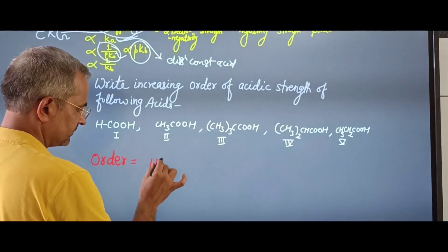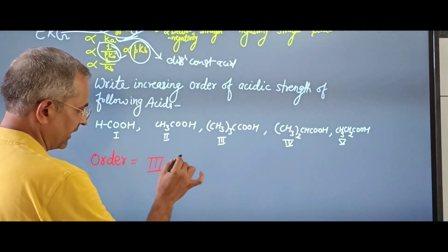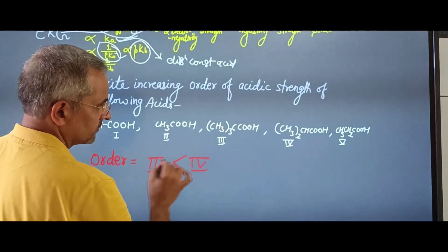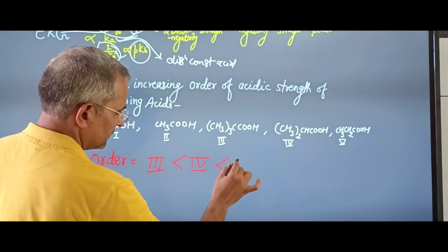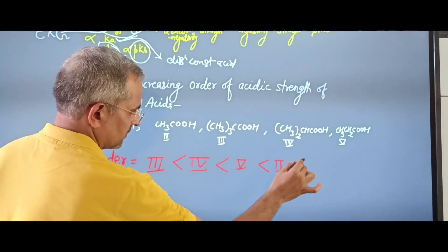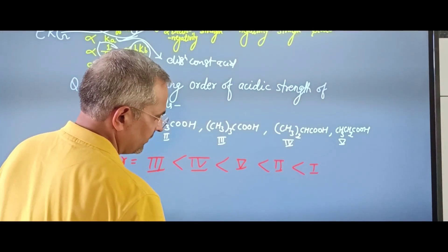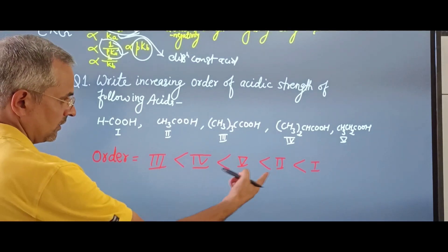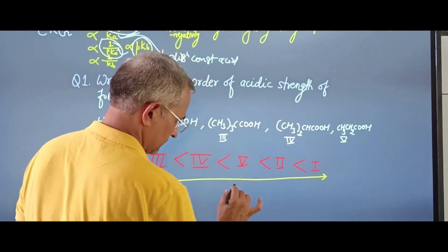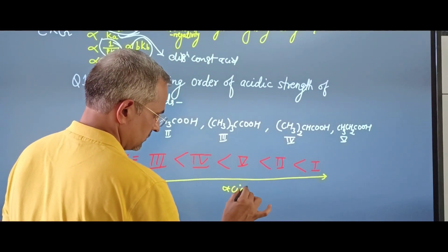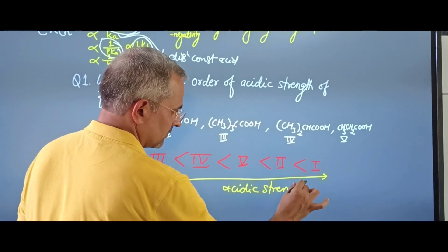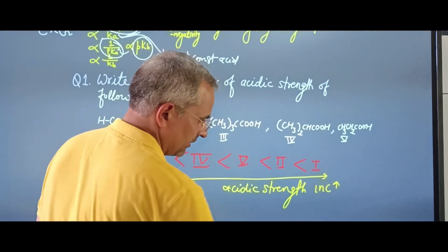The increasing order will be: third, then fourth, then fifth, then second, and first will be the highest. So acidic strength increases in this order, going from least to most acidic.